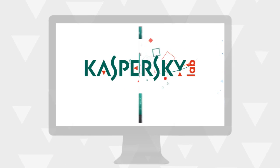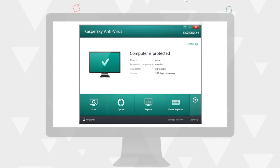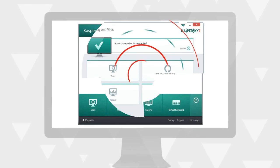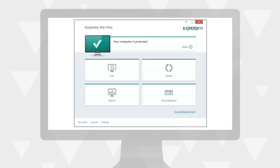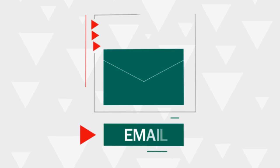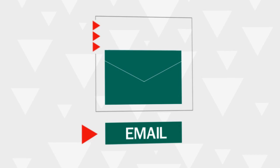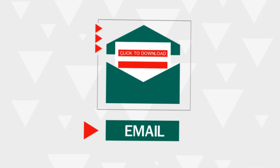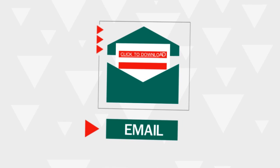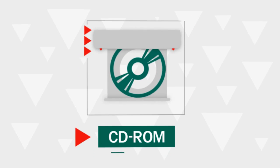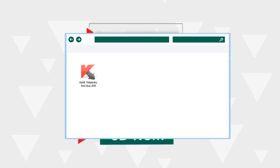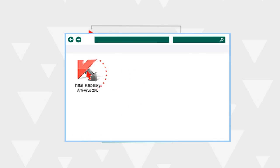If you have a previous version of Kaspersky Antivirus or Kaspersky Internet Security installed, just install Kaspersky Antivirus on top of it. After purchasing Kaspersky Antivirus in an online store, download and open the file sent to your email. If you purchased a boxed version, just insert the disk into your optical drive and launch the installation file if necessary.